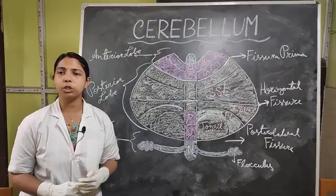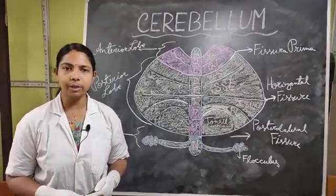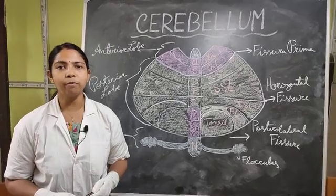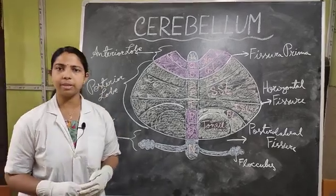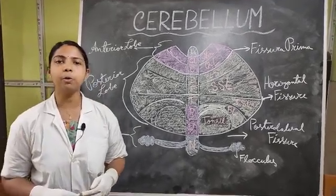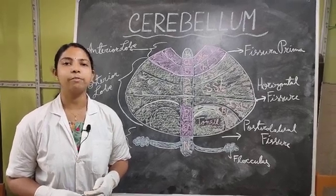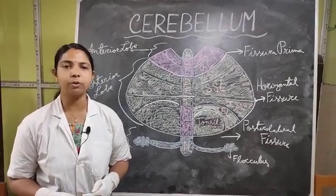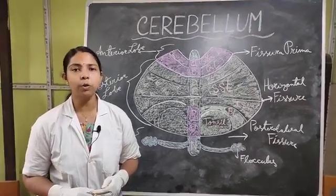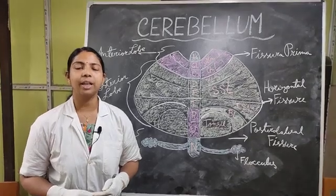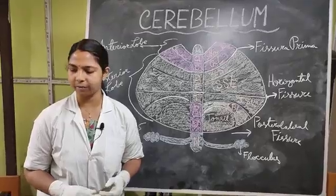The main function of the cerebellum is to maintain muscle tone, equilibrium, posture, and coordinated movements. The archicerebellum maintains posture, tone, and equilibrium of the trunk muscles. The paleocerebellum maintains posture, tone, equilibrium, and crude movements of the limbs. The neocerebellum is responsible for the smooth performance of skillful activities.